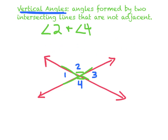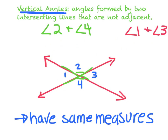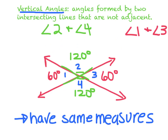Angle 1 and angle 3, if you look at those two, they're not connected — they're straight across from each other. Those are also vertical angles. Now, there's something special about vertical angles: they have the same measure, or equal measures. So if angle 2 was 120 degrees, you would know that angle 4 also measures 120 degrees. If angle 1 was 60 degrees, angle 3 would be 60 degrees because it's vertical.